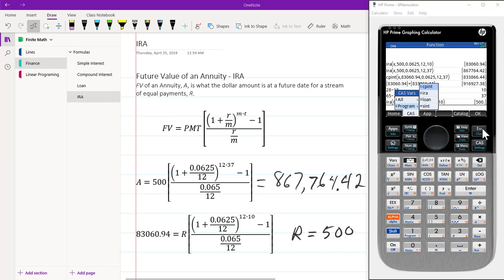Escaping out of these menus we work the IRA function and the compound interest function. When we are calculating the amount we put the X in the first value. When we are calculating the payment we put the X in the second value.